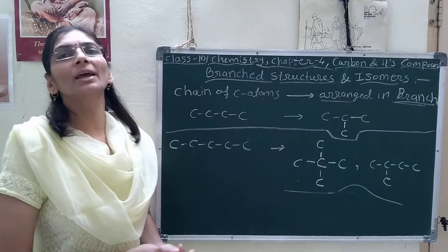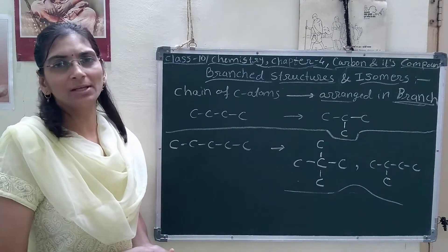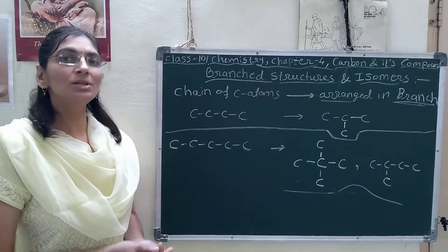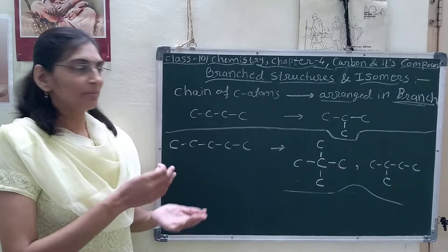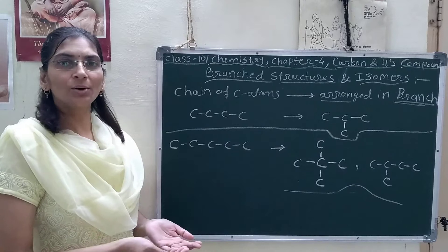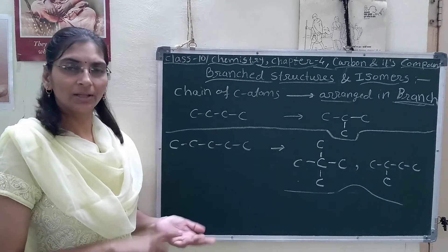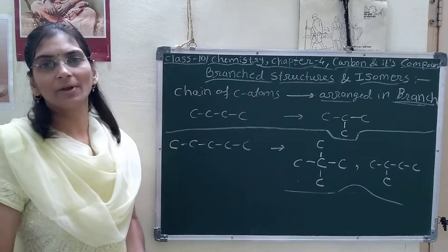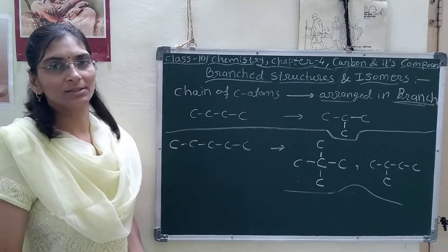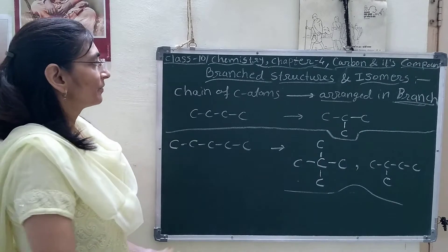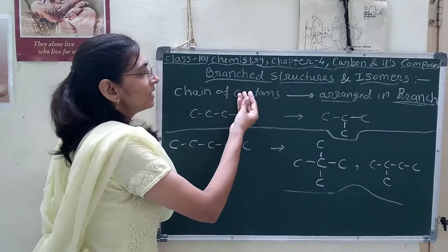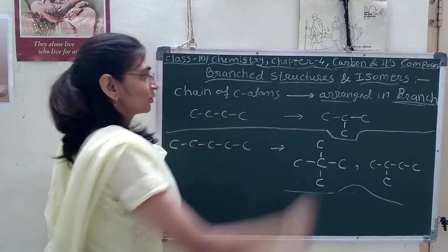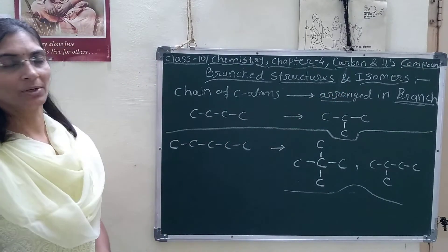We also saw bromoethane. Then for the functional group alcohol, we have seen methyl alcohol, ethyl alcohol — the structure of ethyl alcohol and methyl alcohol and the whole series. In this topic we will see the branch structure and isomers of hydrocarbons.